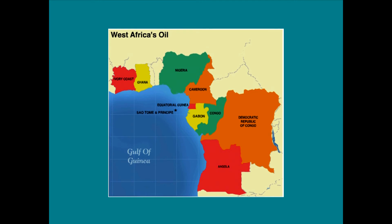This map shows you Africa's West African producers, which were the earliest producers. This is called the Gulf of Guinea, and the oldest producers are Nigeria, Angola, and Gabon. They've been producing since the 50s. Other countries have recently come online like Ghana and Ivory Coast. But in general, the Gulf of Guinea has been the source of oil throughout the last half of the 20th century for the global market.